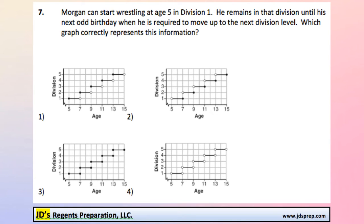Welcome to problem number 7 from the June 2015 Algebra Regents exam. Morgan can start wrestling at age 5 in division 1. He remains in that division until his next odd birthday, where he's required to move up to the next division level.